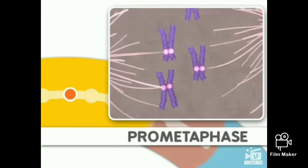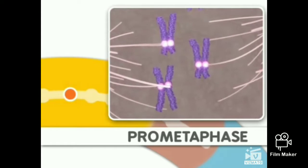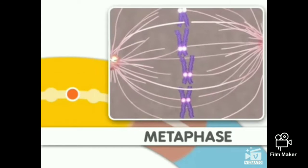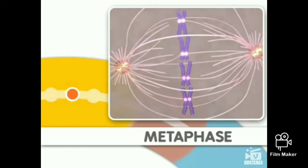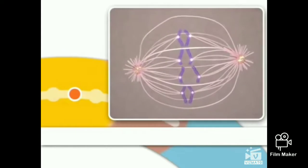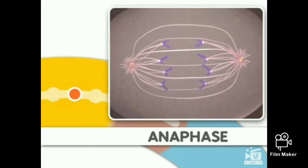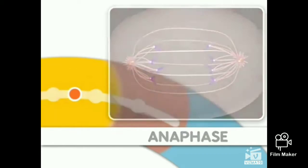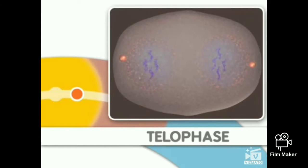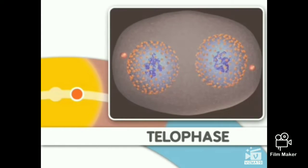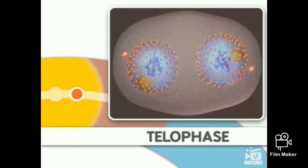Next comes prometaphase, where microtubules attach to chromosomes. This step is followed by metaphase, where the chromosomes align. Metaphase is followed by anaphase, where the chromosomes separate. Finally, during telophase, nuclear membranes reappear around two sets of chromosomes. Mitosis is now complete.